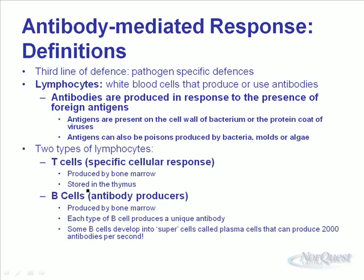Two types of lymphocytes are T cells and B cells. T cells are produced by bone marrow and stored in the thymus — they provide a specific cellular response. B cells are the antibody producers. Each type of B cell produces a unique antibody, and that antibody can only interact with one type of foreign invader. Some B cells that turn into plasma cells can produce up to 2,000 antibodies per second.